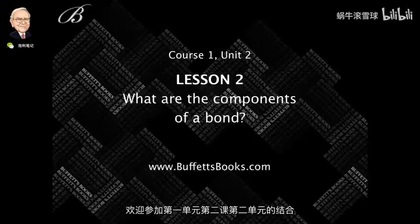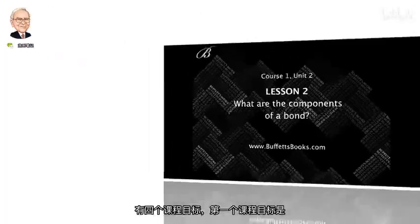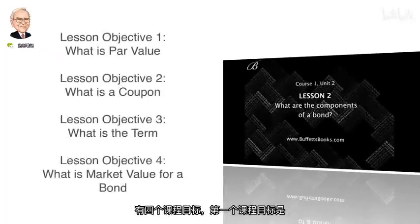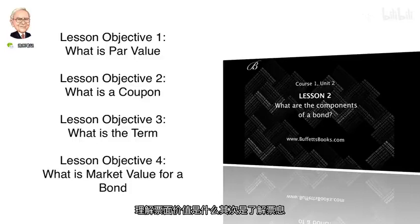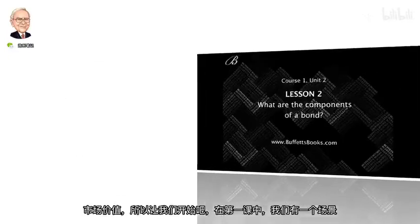Welcome to Course 1, Unit 2, Lesson 2. What are the components of a bond? There are four lesson objectives. The first is understanding what the par value is, the second is understanding what the coupon rate is, the third is understanding the term, and the fourth is understanding market value.